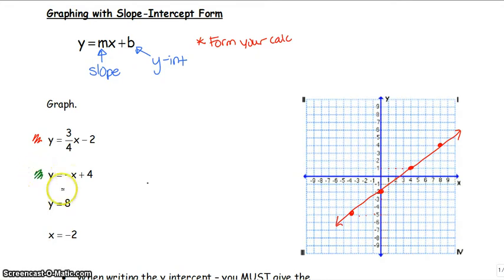Next one, we have y is equal to negative x plus 4. Our slope is negative 1, our y-intercept is 4, so we start up at a positive 4. Now our slope being a negative 1, this could be a negative 1 over 1, or it could be 1 over a negative 1. So we can go down 1, right 1, or up 1, left 1. Now you can continue that in both directions as well. Connecting your points with a straight edge.